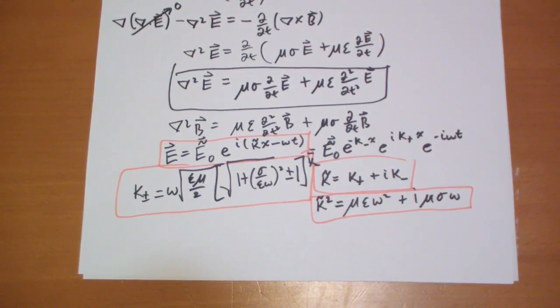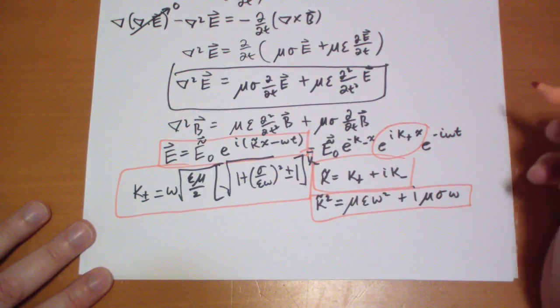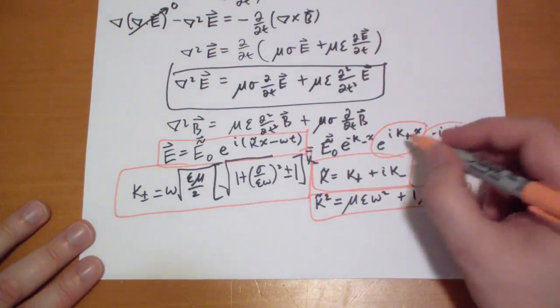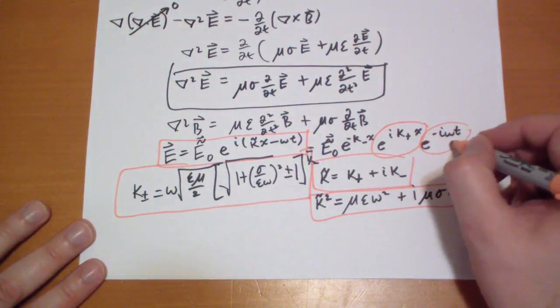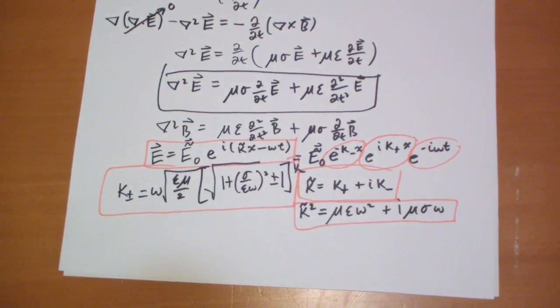It may help if you thought of things this way so you have this term that gives you a wave this term this gives you a wave in the x direction this gives you a wave in the time direction and this gives you attenuation in the x direction okay?